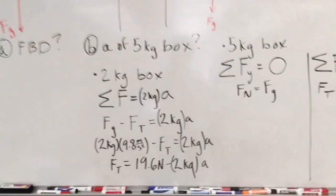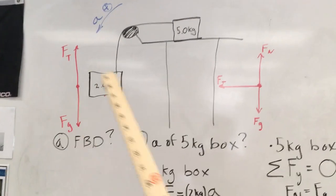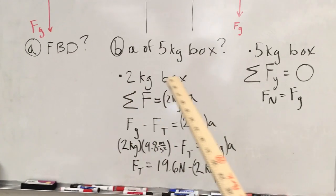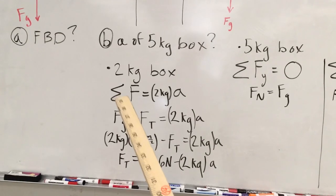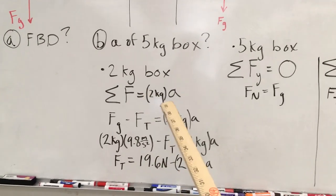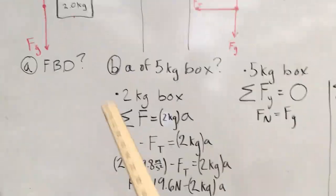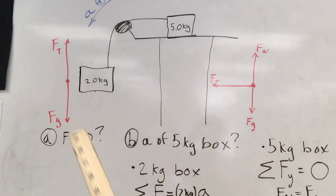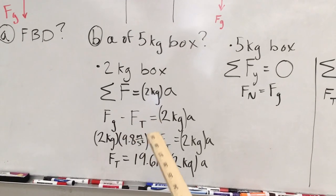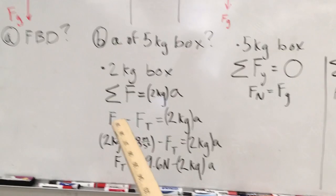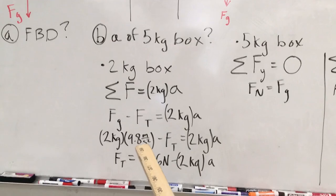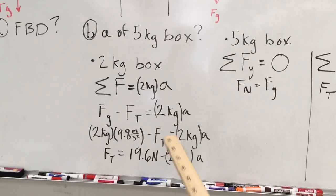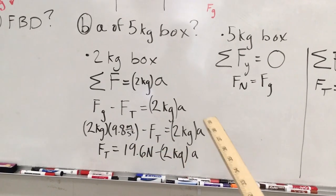For Part B, we calculate the acceleration of the five kilogram block. Because the system is joined, the acceleration of the two kilogram block will be the same. Let's analyze the two kilogram block first. We write out the net force equation: the sum of the forces equals two kilograms times the acceleration. For the net force, we substitute in gravity and tension. Taking the positive direction with the acceleration, we write force of gravity minus force of tension equals two kilograms times acceleration. Force of gravity is mass times gravitational acceleration, so we substitute in those values.